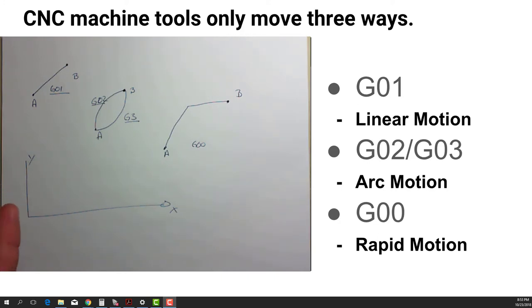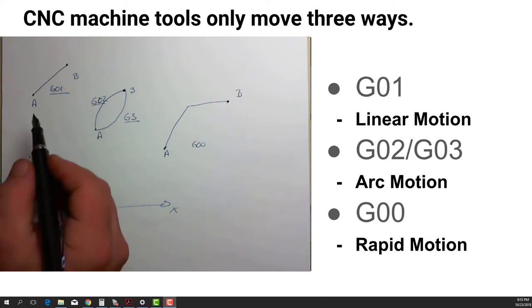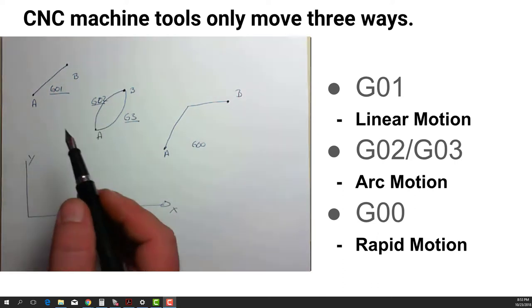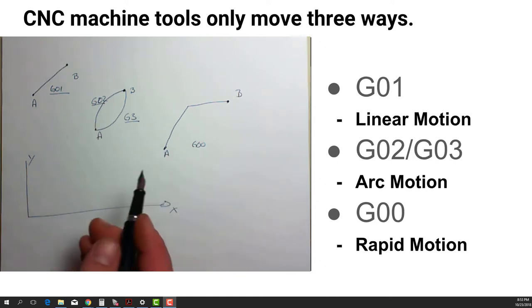It's telling the machine what direction we want to go if we do an arc motion, or it's some combination of this G01 straight line move, G02/G03 arc moves, and G00 rapid moves that have been programmed all together in something that we call a canned cycle or sometimes even a macro.